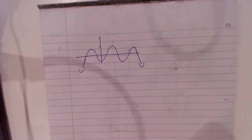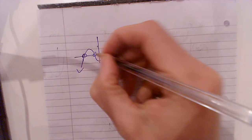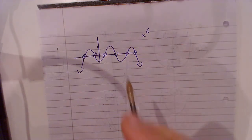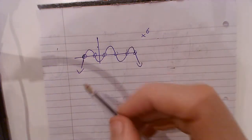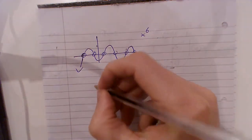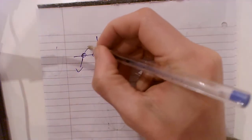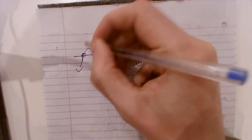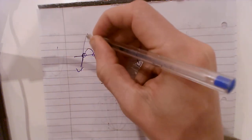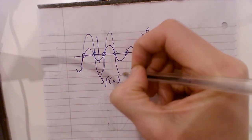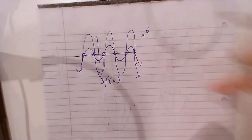Straight away everybody can work out that's 3, 4, 5, 6 — so it's going to be x to the power of 6. Now if that's f of x and I want to get 3f(x), all I know is this is at 1, so here it goes up to 3 and down to 3 obviously. And so on — not rocket science. Let's replace that and look at the book.